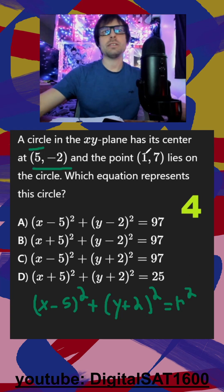They give us a point. Remember, a point is an x and a y. So I would plug in 1 for my x, plug in 7 for my y, and I can solve for r.